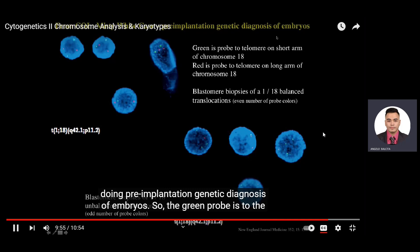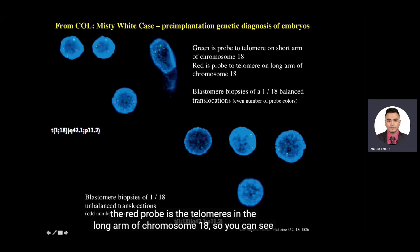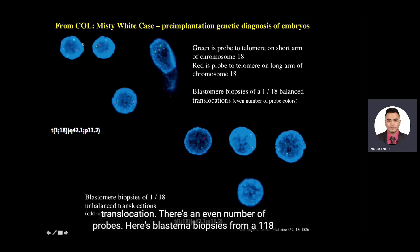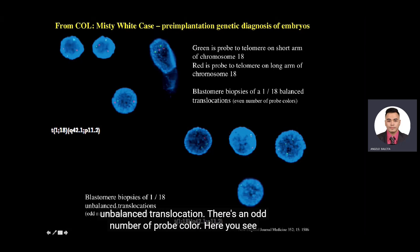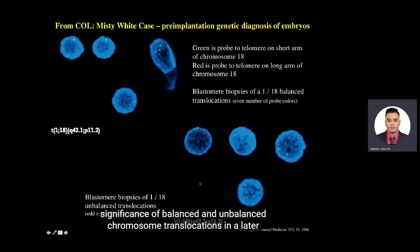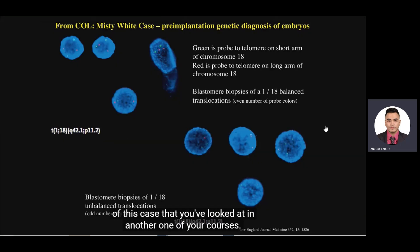In the Misty-White case, they were doing pre-implantation genetic diagnosis of embryos. The green probe is to the telomeres on the short arm of chromosome 18, and the red probe is to the telomeres on the long arm of chromosome 18. These are blastomere biopsies of a 1;18 balanced translocation — there's an odd number of probe colors. Here you see three green and one red; here two red, one green. We'll talk about the significance of balanced and unbalanced chromosome translocations in a later podcast.